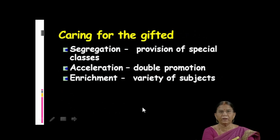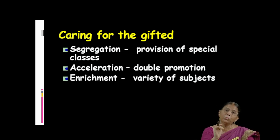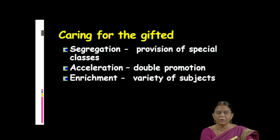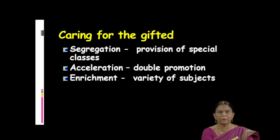How do you take care of gifted children? The first method is segregation. In schools, a special or separate class may be provided for those children who have got higher marks. But the drawback of segregation is that they don't have the chance to mingle with normal, average, or below-average children.